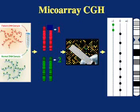It uses two DNA samples that are compared for their differences. One sample is the normal sample, labeled with a green fluorescent dye. The patient DNA sample is labeled with a red fluorescent dye.